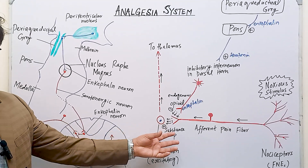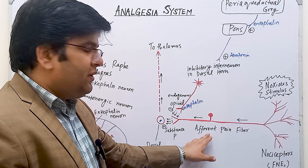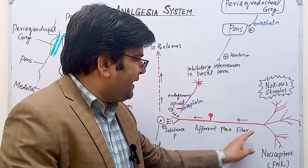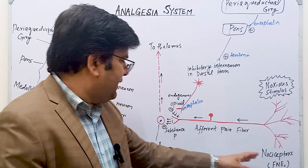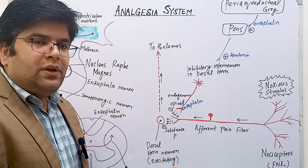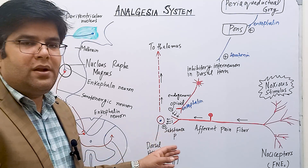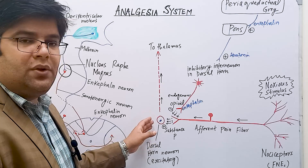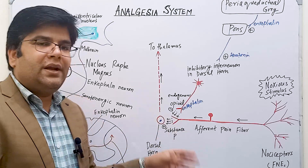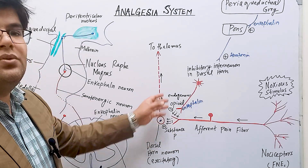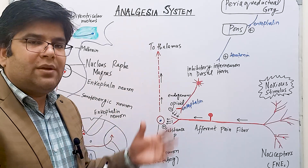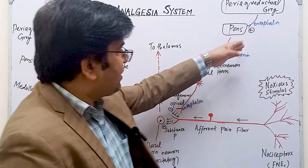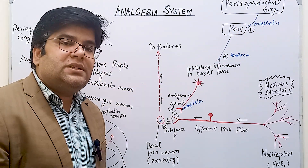Let me explain this through a diagram. Suppose this is an afferent pain nerve fiber which detects a noxious pain stimulus via its free nerve endings. This afferent pain nerve fiber, in the dorsal gray horn of the spinal cord, releases substance P. Substance P then stimulates interneurons, and the interneurons stimulate second-order neurons which take signals to the thalamus and then the cerebral cortex. This is the ascending pathway. We also have a descending pathway — the analgesia system of the body — that suppresses signals at the entry level in the spinal cord.